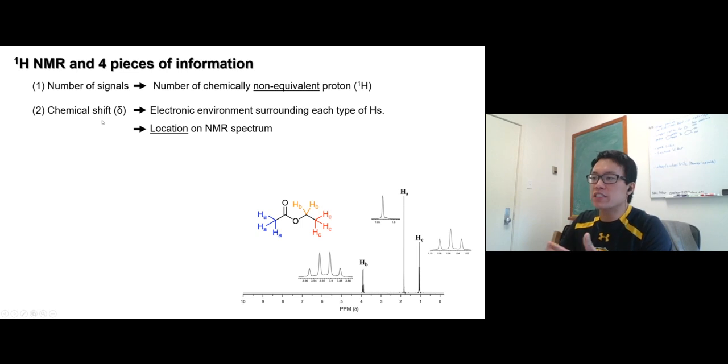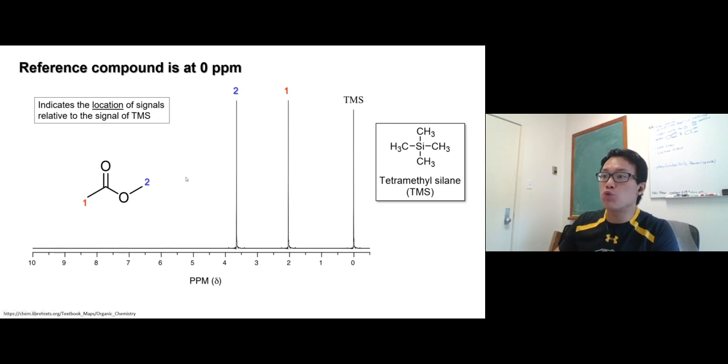The chemical shift is a location on NMR spectrum that's relative to the chemical shift of zero of a reference compound, TMS - tetramethylsilane. The four methyl groups, 12 hydrogens on TMS show the same signal. We set that at zero, and everything else, any other signal is based off TMS.